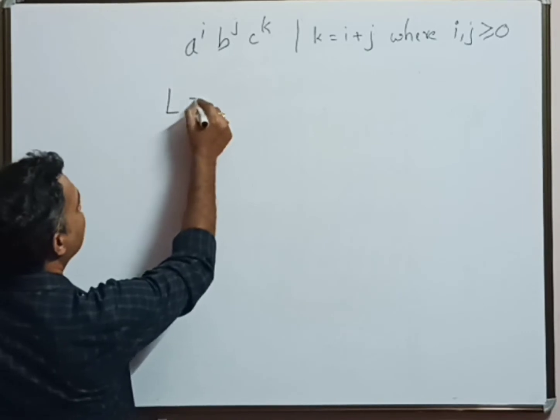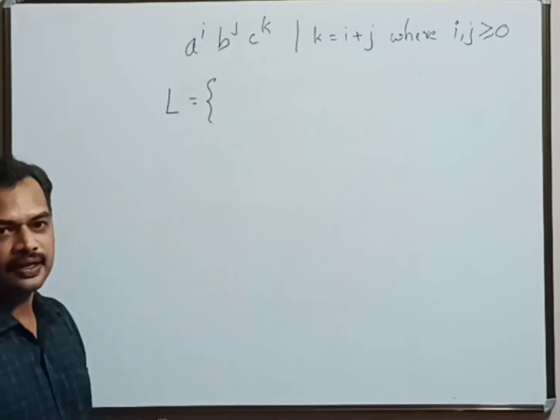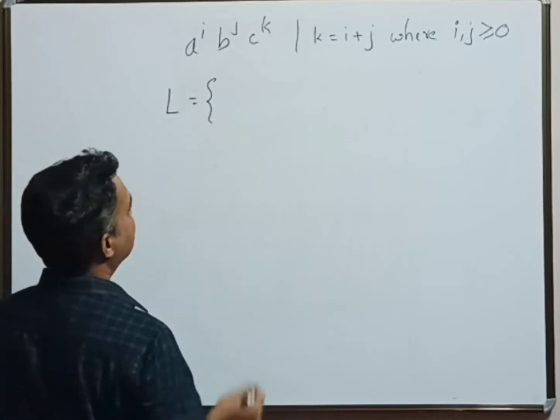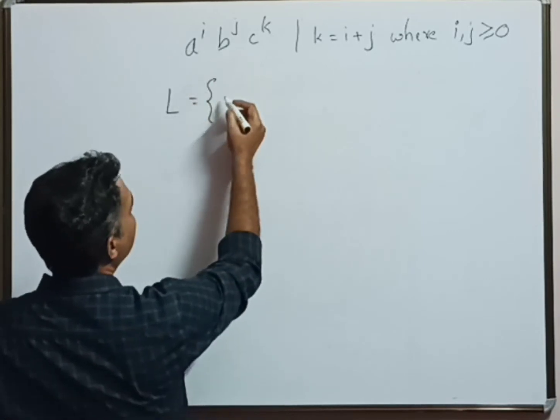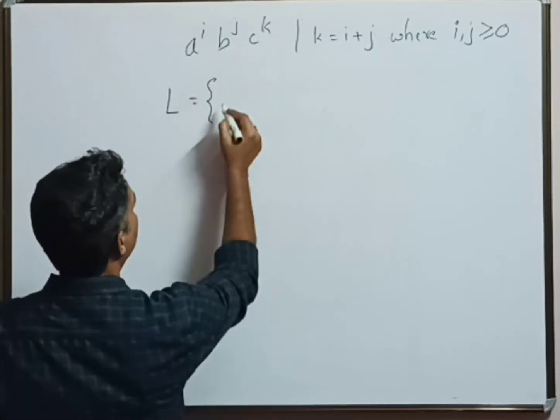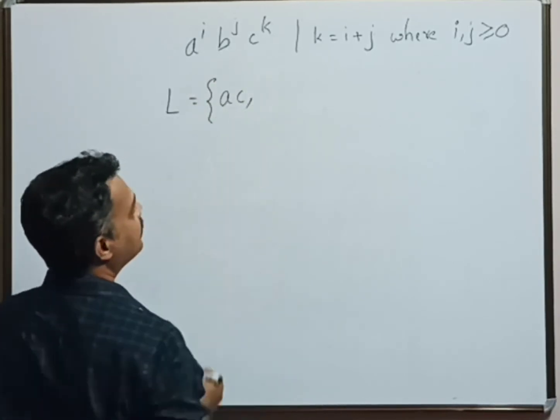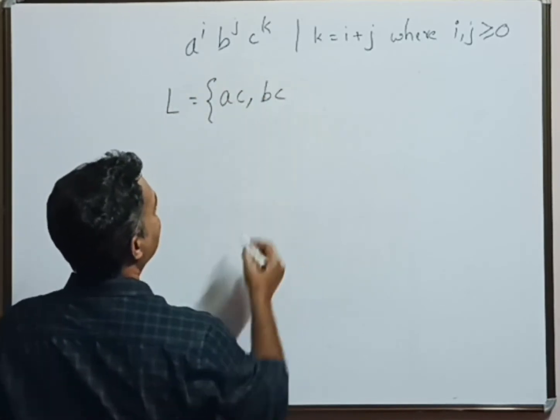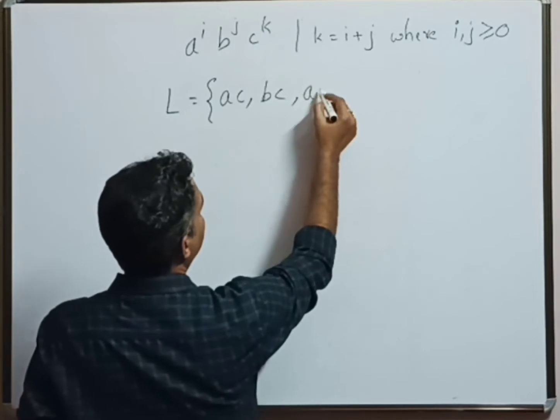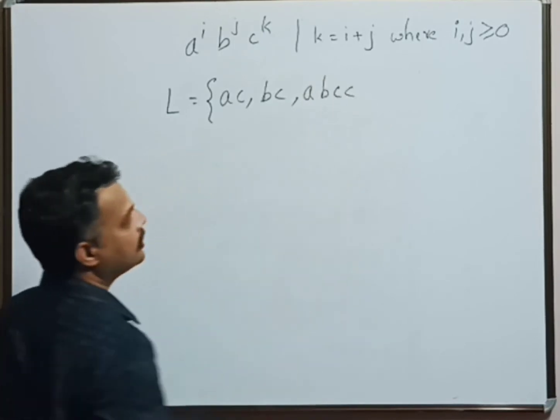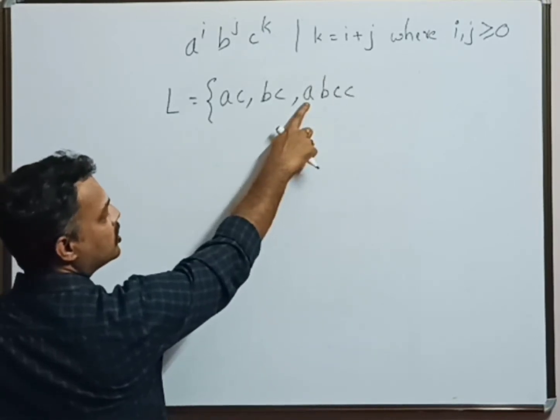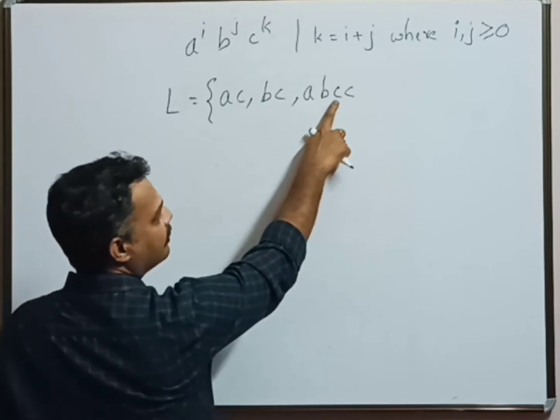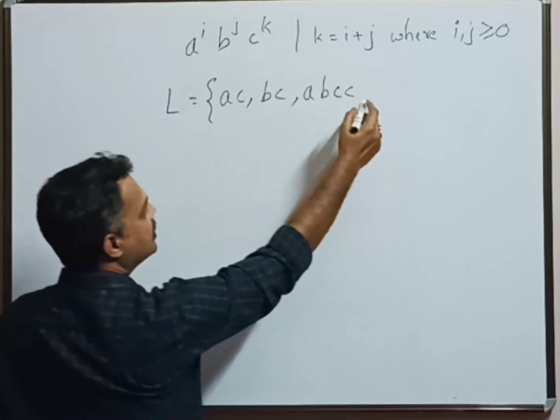Now let us first frame the language set L. Possible strings can be: suppose if number of b's are zero, it can be ac; if number of a's are zero, it can be bc; it can be abcc where number of occurrences of a plus number of occurrences of b equals two times occurrence of c.